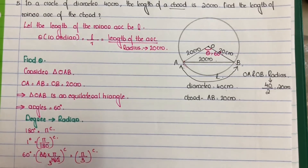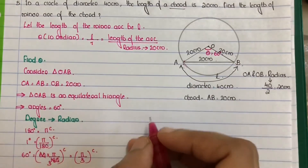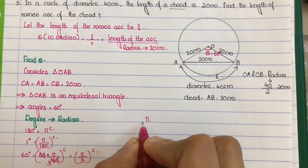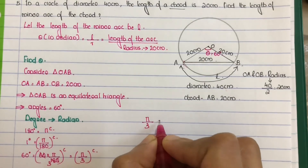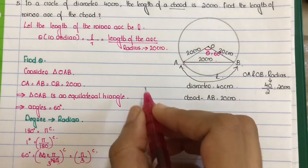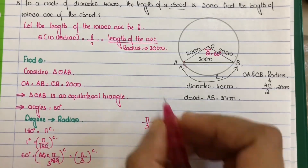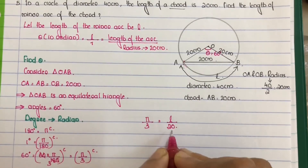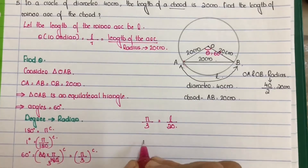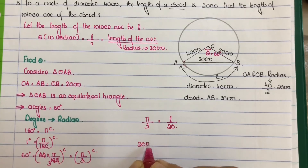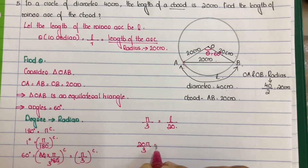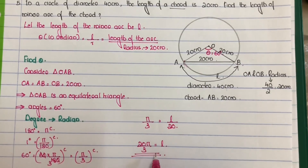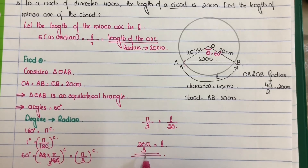So 60 degrees equals pi by 3 radians. Substituting into the equation: pi by 3 equals L divided by 20. Therefore, L equals 20 times pi by 3, which gives L equals 20 pi by 3. The length of the minor arc of the chord is 20 pi by 3 centimeters.